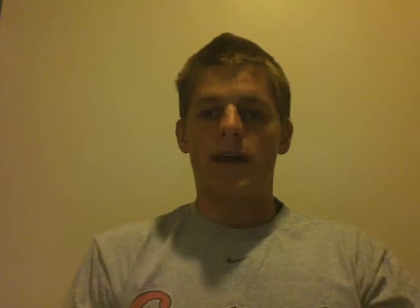Now Mike will run through an example problem using our formulas from class. A typical LED uses 30 milliwatts of power and has a resistance of 0.01 ohms. Will the LED in an electromagnetic induction flashlight light if the change in the magnetic field through the solenoid is negative 0.6 tesla over 1.2 seconds? The radius of the solenoid is 2 centimeters.